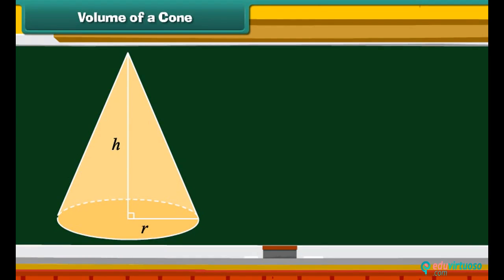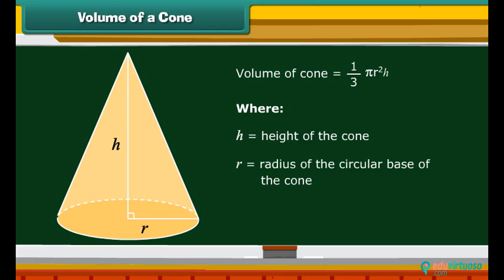Volume of a cone is simply given by one-third pi r squared H, where H is equal to height of the cone and r is equal to radius of the circular base of the cone.